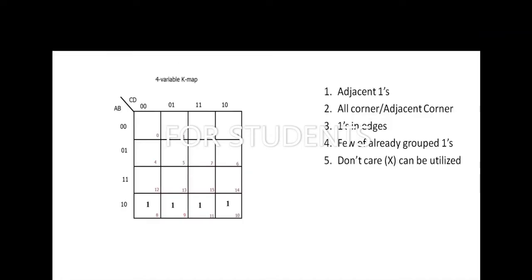Here we have all 5 rules illustrated using a 4-variable KMAP. In this first case, all 4 ones are adjacent. So we can apply the adjacent ones rule and make them a single group — a quad. Our aim is always to get the maximum grouping, because maximal grouping gives us the minimum number of variables.